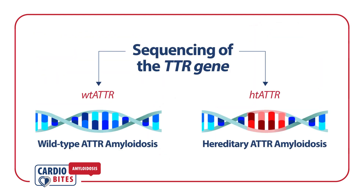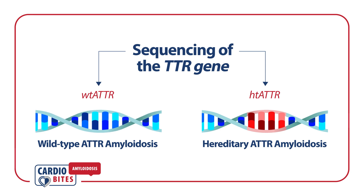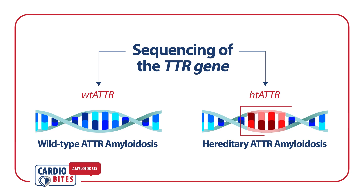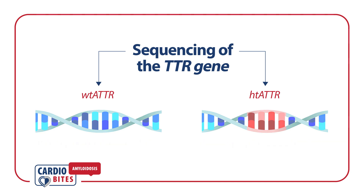ATTR is classified by sequencing of the TTR gene as either wild type ATTR amyloidosis, which has no mutation, or hereditary ATTR amyloidosis, which has an identified DNA variant. The DNA variant in the TTR gene that destabilizes the TTR protein puts carriers of the pathogenic TTR alleles at lifelong risk of developing ATTR.